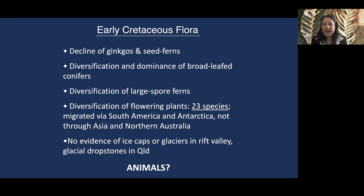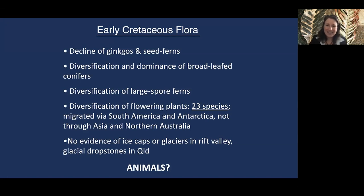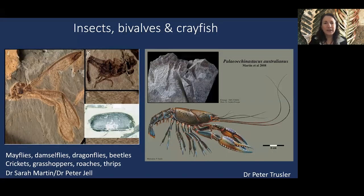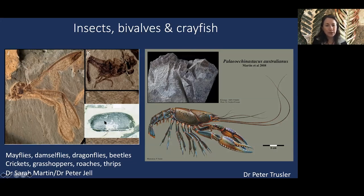What about the animals? What fossils can tell us about life near the poles within the Antarctic circle? If we think of what's down there today, there are penguins, a few seals, but really not much in the way of plants — only three flowering plant species in Antarctica today. But we have fossils of a beautiful rich ecosystem filled with different kinds of insects. There are mayflies, damselflies, beautiful dragonflies, beetles, little crickets and grasshoppers, cockroaches, and thrips. Recent work has been done by Dr. Sarah Martin from Western Australia.